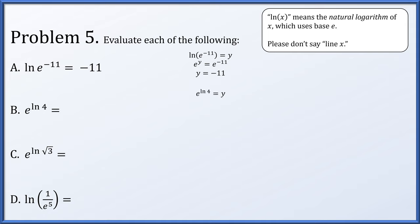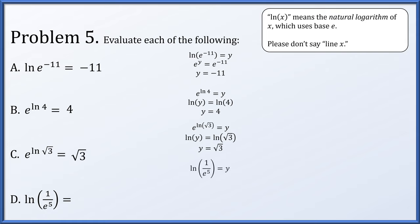For part b, we set e to the natural log of 4 equal to y. Converting to a logarithm base e, the log of y equals log of 4. Since logarithms are also one-to-one, y equals 4. For part c, we set e to the natural log of root 3 equal to y. The log base e of y equals log of root 3, so y equals root 3. For part d, the natural log of 1 over e to the 5th equals y. Since 1 over e to the 5th equals e to the minus 5, we get y equals minus 5.